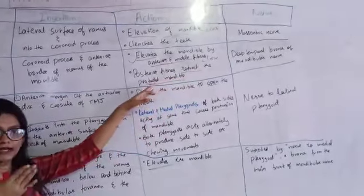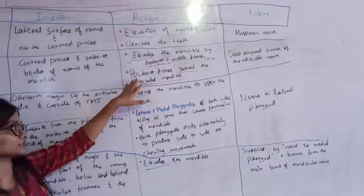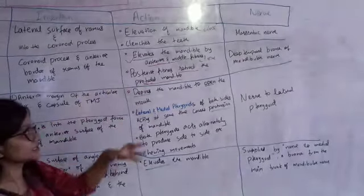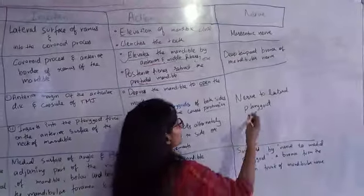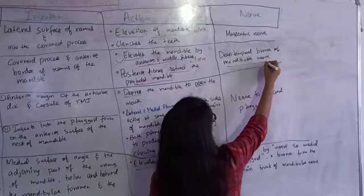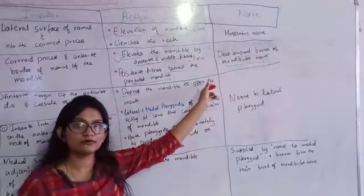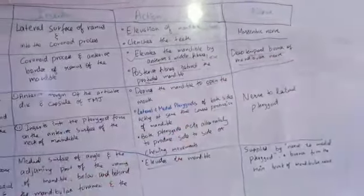The posterior fibers of temporalis retract the mandible — they pull the mandible backward if it has been protruded forward. Its nerve supply is the deep temporal branch of the mandibular nerve.